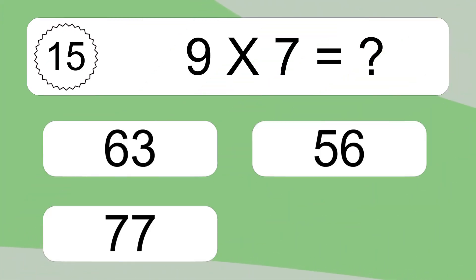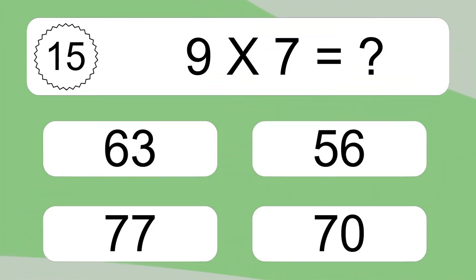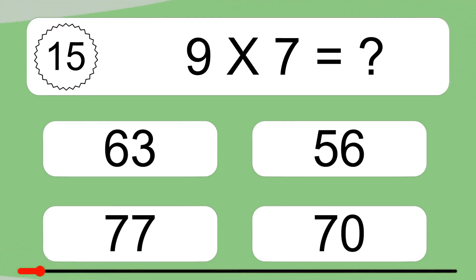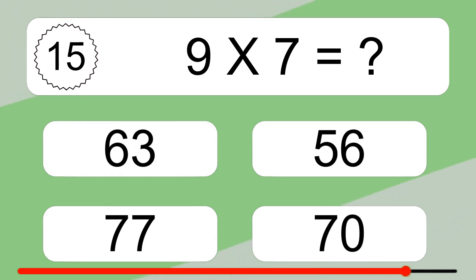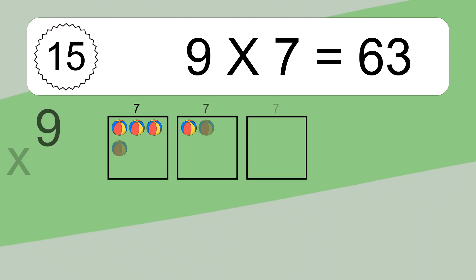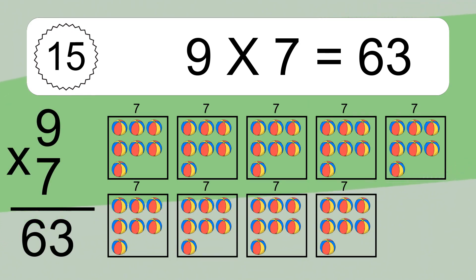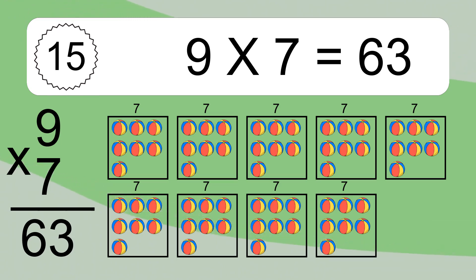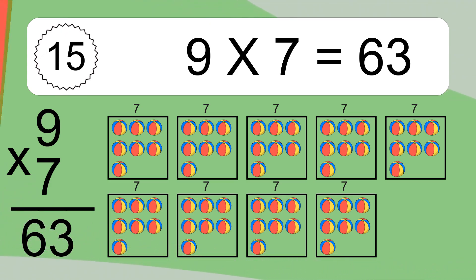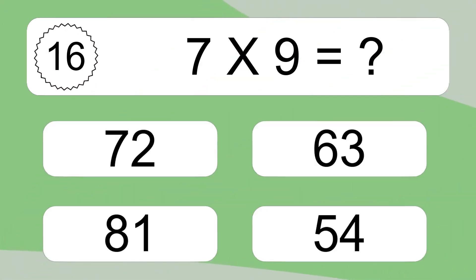9 times 7 equals what? 9 times 7 equals 63. We have 9 boxes, and each box has 7 colorful balls inside. If you count all the balls in all the boxes together, you will have 9 times 7 balls. This equals 63 balls.